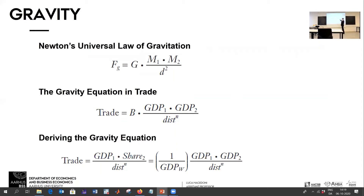What is the mass in economics? It's captured by GDP. So trade is proportional to the product of the two countries' GDPs, and inversely proportional to the distance between these two countries. That is the gravity equation.